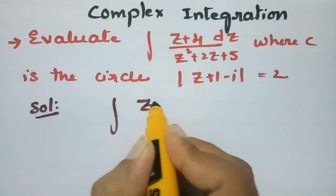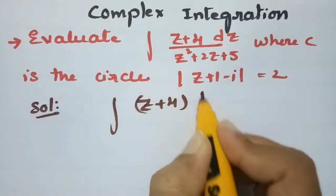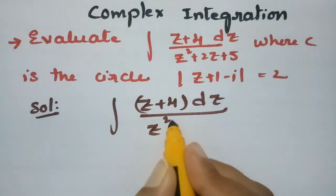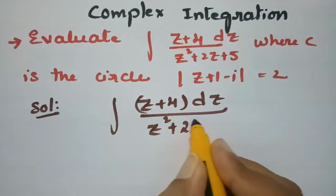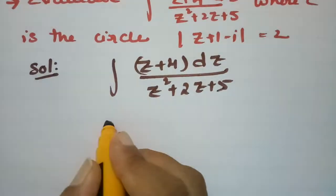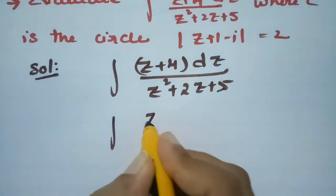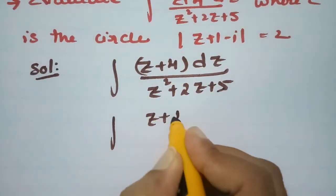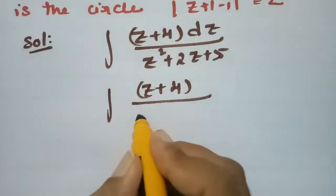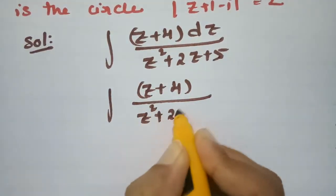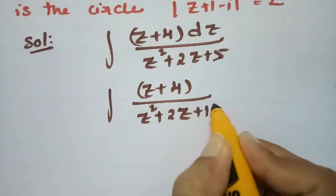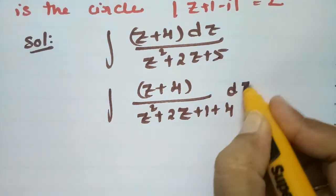We have to evaluate the integral of (z+4) dz divided by z²+2z+5. I'll rewrite the denominator by splitting 5 as 1+4, giving z²+2z+1+4.